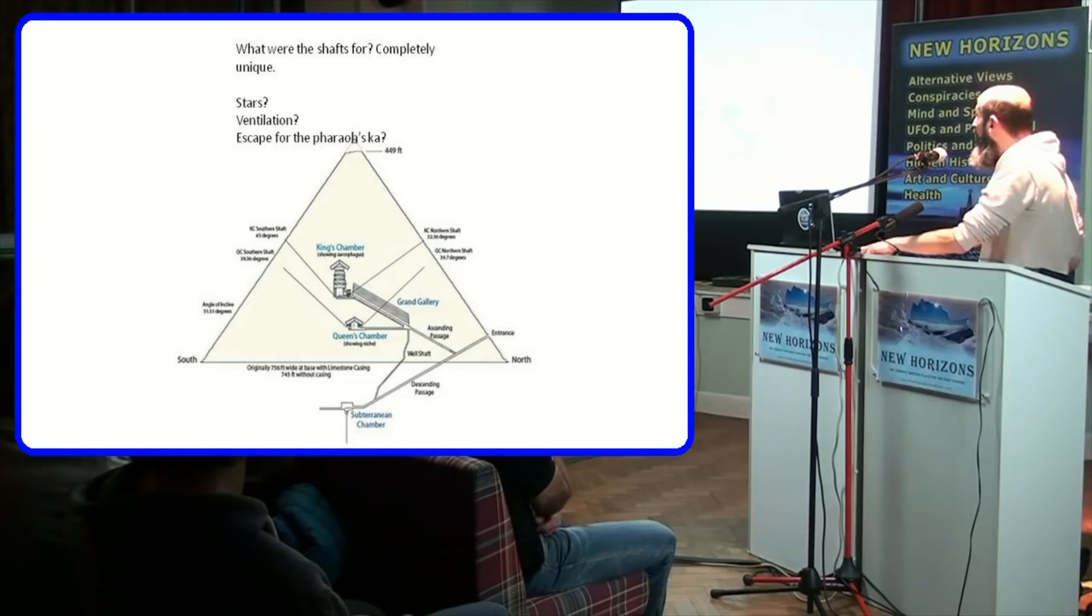They weren't measured till Flinders Petrie in the late 19th century. These shafts are pretty much equal angles, so any alignment with stars is just going to be coincidental. If it was built as a way to observe stars, you're not going to see anything - these things are only eight inches square anyway.